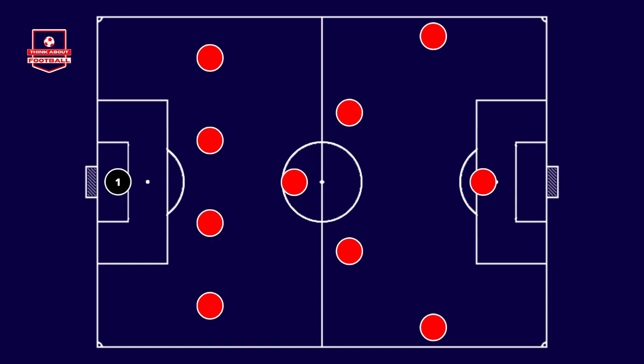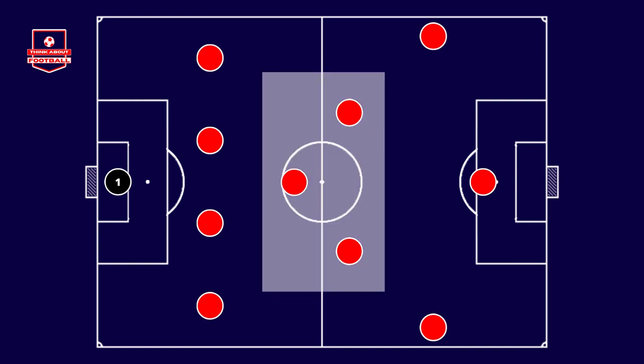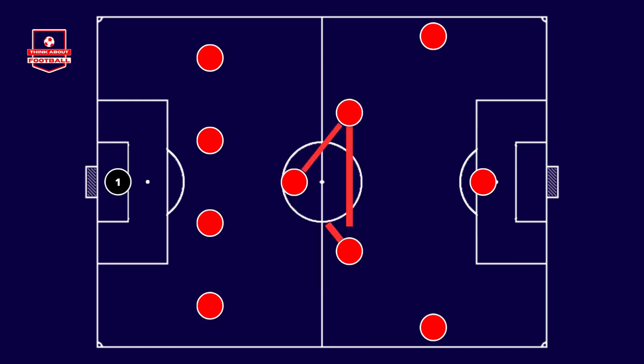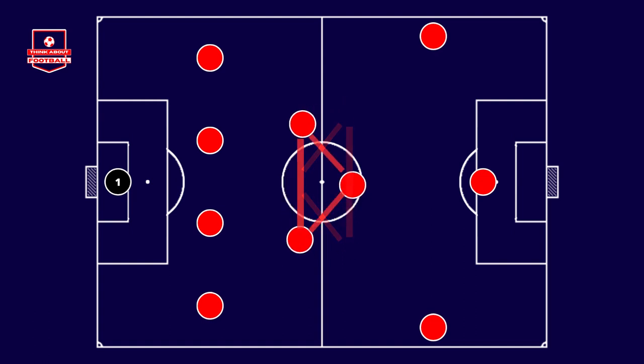However, there are several ways to vary the positioning of players in each of these sectors, especially in the midfield. We can see the 4-3-3 with a triangle, featuring one defensive midfielder and two more advanced midfielders. We can also see an inverted triangle, with two players deeper and one slightly advanced.